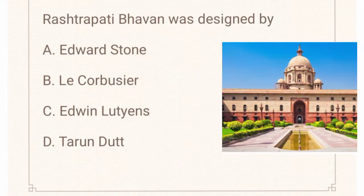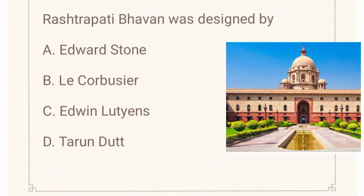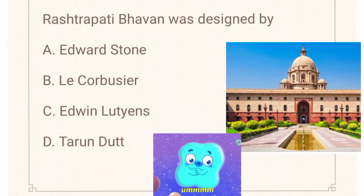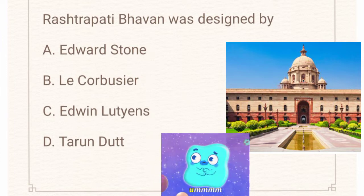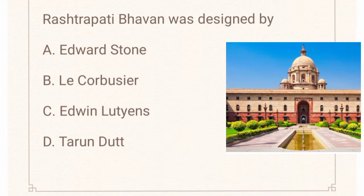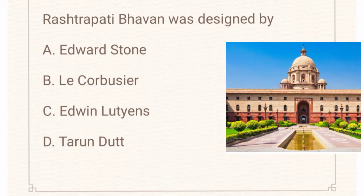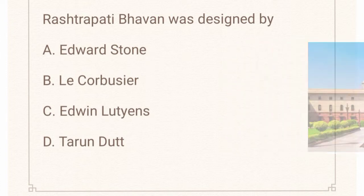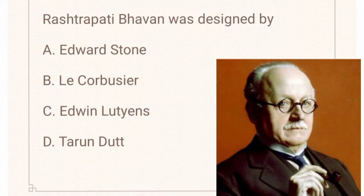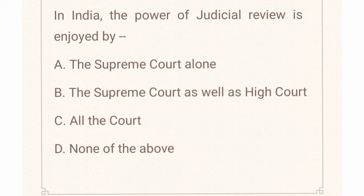The next question is: Rashtrapati Bhavan was designed by whom? Your options are Edward Stone, Le Corbusier, Edwin Lutyens, or Tarundar. Rashtrapati Bhavan is the official home of the President of India. It was designed by the British architect Edwin Lutyens, and it was known as Viceroy House till 1950. So the answer is option C: Edwin Lutyens.